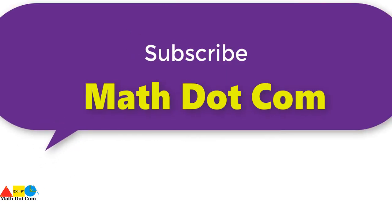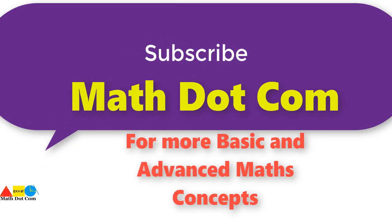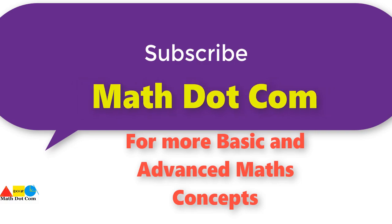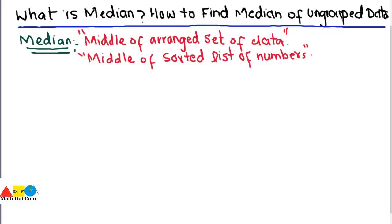If you are visiting our channel for the first time, please subscribe first to get basic and advanced maths concepts. In our previous lecture we covered what is mode, one of the measures of central tendency, and how to find the mode of grouped and ungrouped data. Today we are going to learn another measure of central tendency — the median.